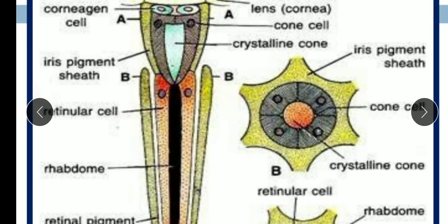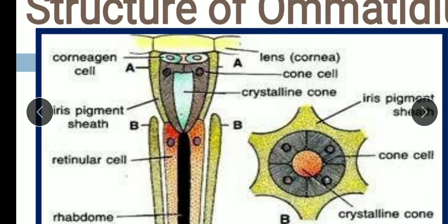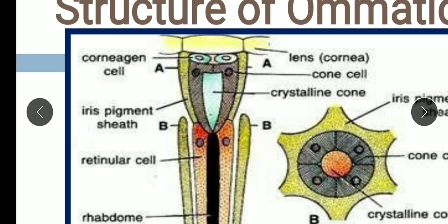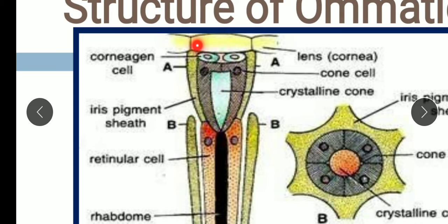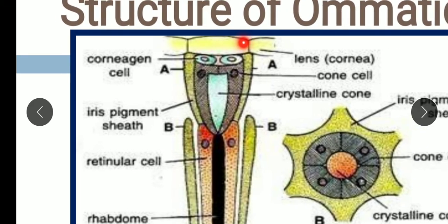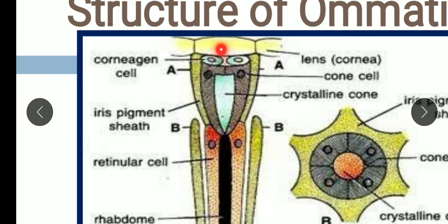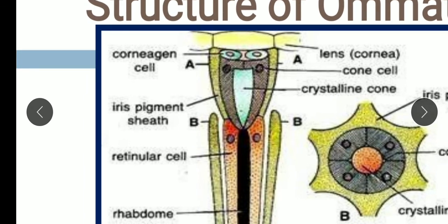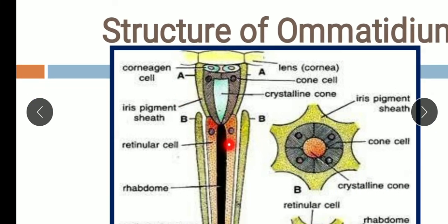The light-gathering region is represented by the corneal lens and the crystalline cone. The corneal lens is a region of transparent cuticle produced by the primary pigment cells — the cuticle becomes transparent and forms the lens, with a smooth surface. The crystalline cone is a clear, hard material produced by four crystalline cone cells, with an outer sheath covering it.